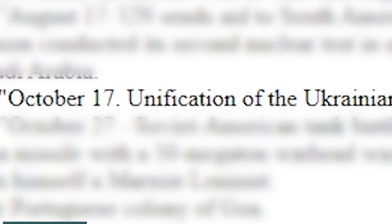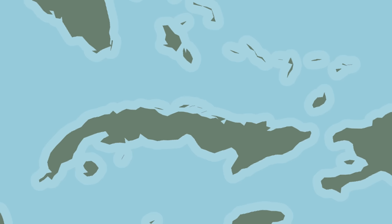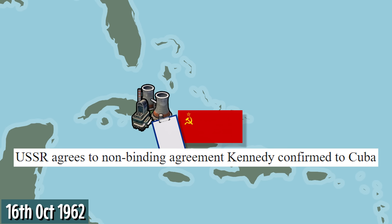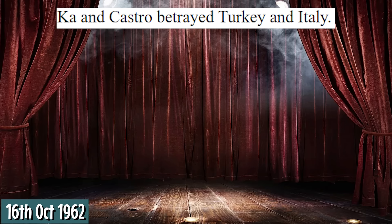October 17th: unification of the Ukrainian SSR and the Ukrainian SSR. It's the Cuban Missile Crisis. October 16th: USSR builds nuclear power plant in Cuba. USSR agrees to non-binding agreement. Kennedy confirmed to Cuba about nuclear missiles and promised to destroy US missiles. Ka and Castro betrayed Turkey and Italy. What? Why?